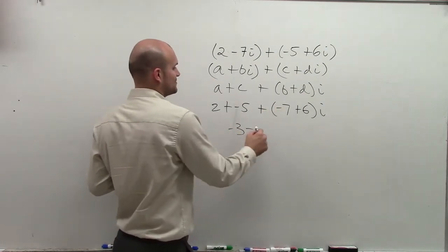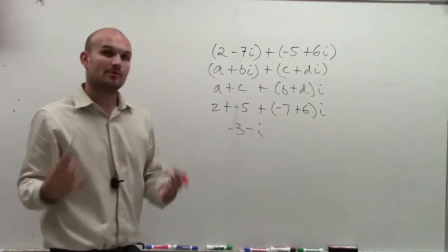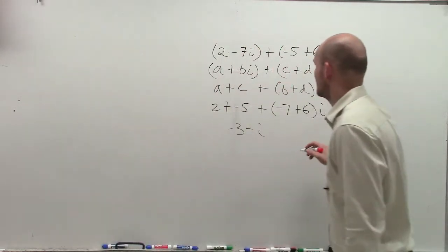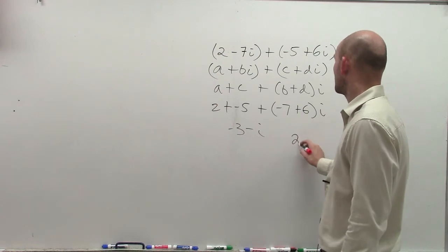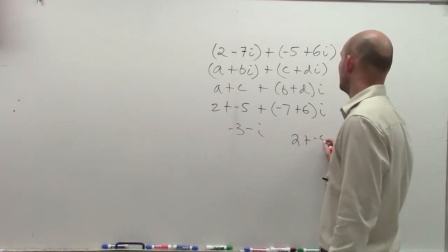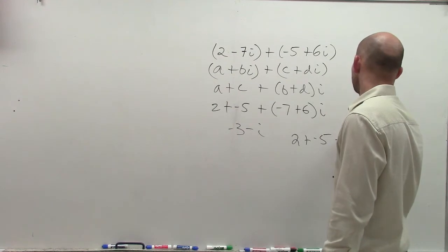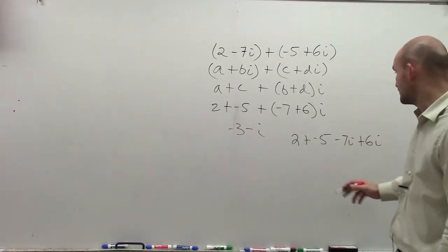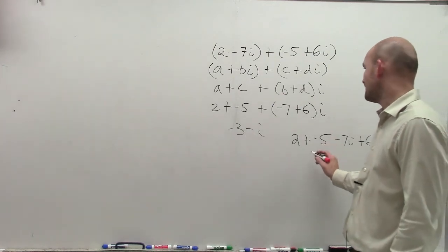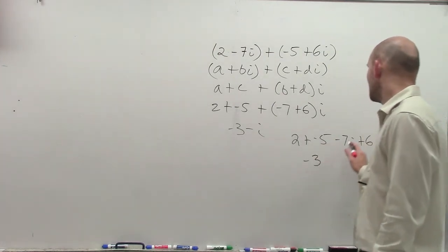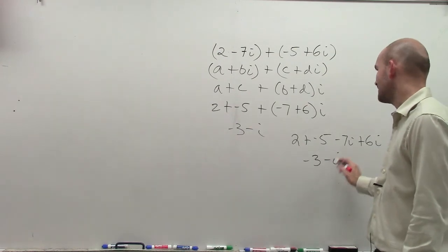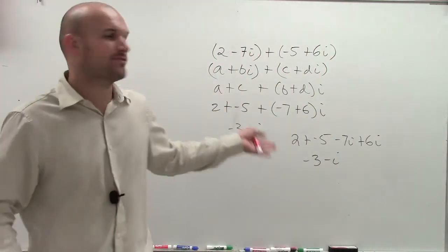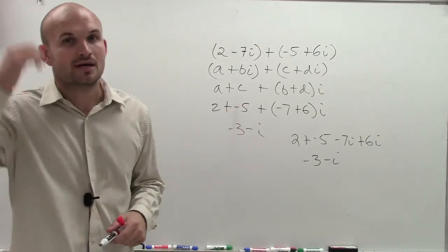Negative 7 plus 6i is going to be a negative i. Let me work that a little bit slower. I could do 2 plus negative 5, and then minus 7i plus 6i. Combine your like terms. So 2 plus negative 5 is a negative 3. Negative 7i plus 6i is a negative i. So there is a different way to go through it, a little bit slower, and maybe makes more sense from what you've already previously learned in your math. But it's the same thing.